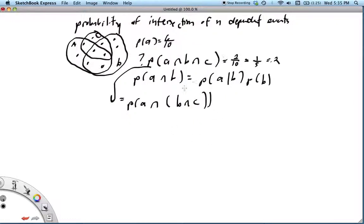Fair enough, and now we're in a position to apply our definition. We can say that this is equal to the probability of A given B intersect C times the probability of B given C times the probability of C.